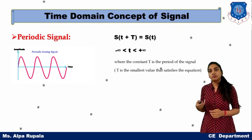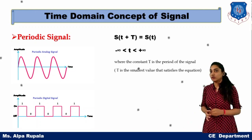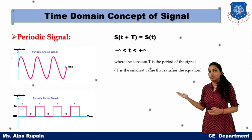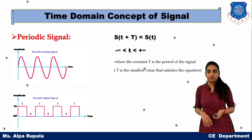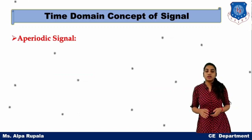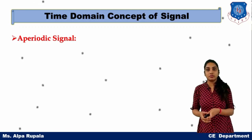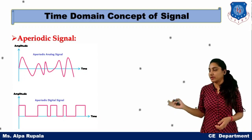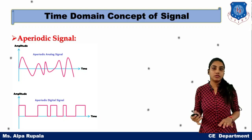A periodic signal can exist in analog form as well as in digital form — the pattern is repeated in both cases. An aperiodic signal, unlike a periodic signal, does not repeat itself. Both the aperiodic analog signal and the aperiodic digital signal are not repeated.